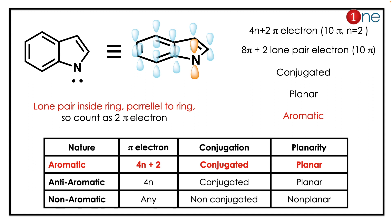If you count pi electrons blindly, you will commit a mistake because you will end up with an anti-aromatic system. Here you should count the lone pair, because the lone pair participates in the delocalization — the lone pair is parallel to the ring electron distribution. Here I've shown one in color and the others are in blue; if you look, it will be parallel to the pi electron cloud.